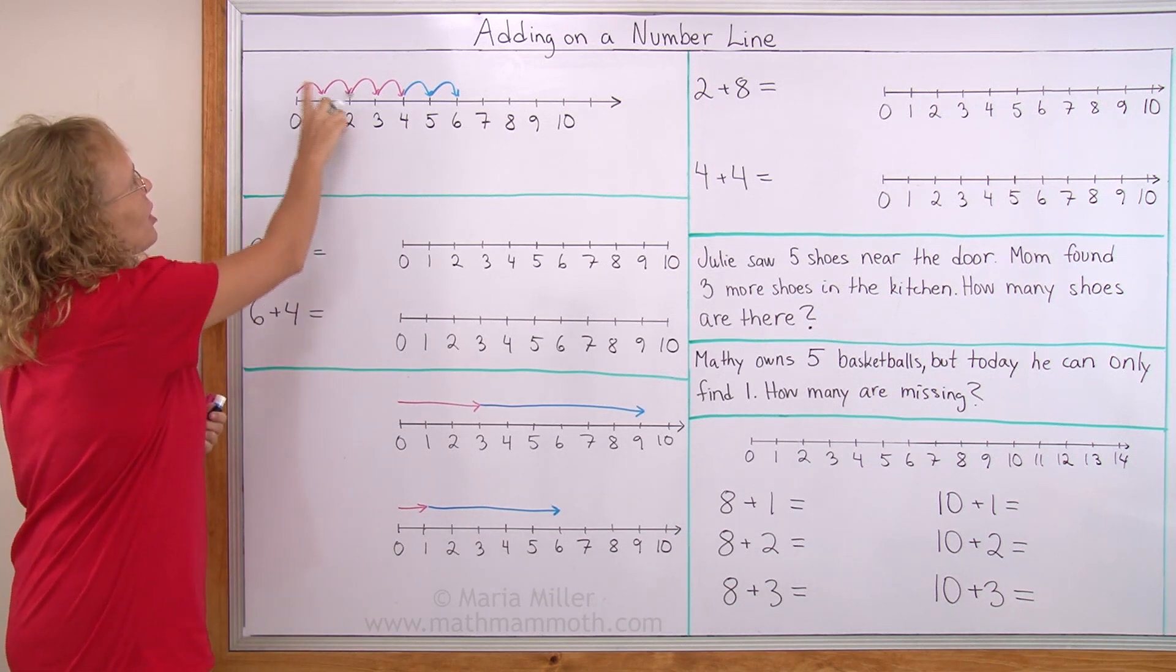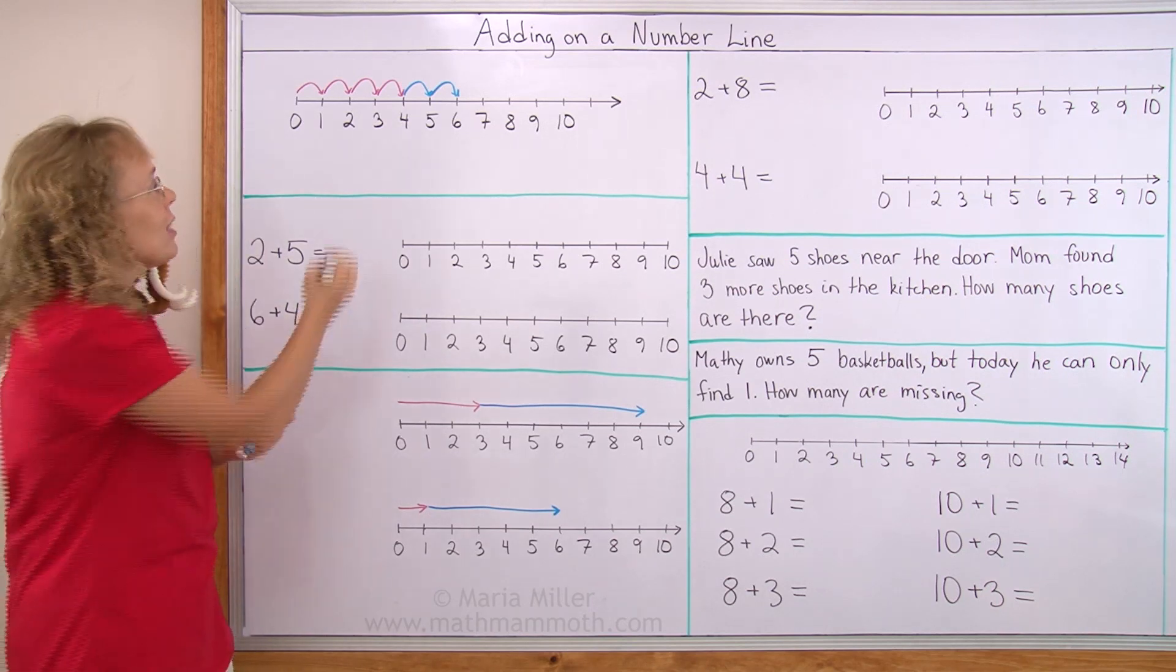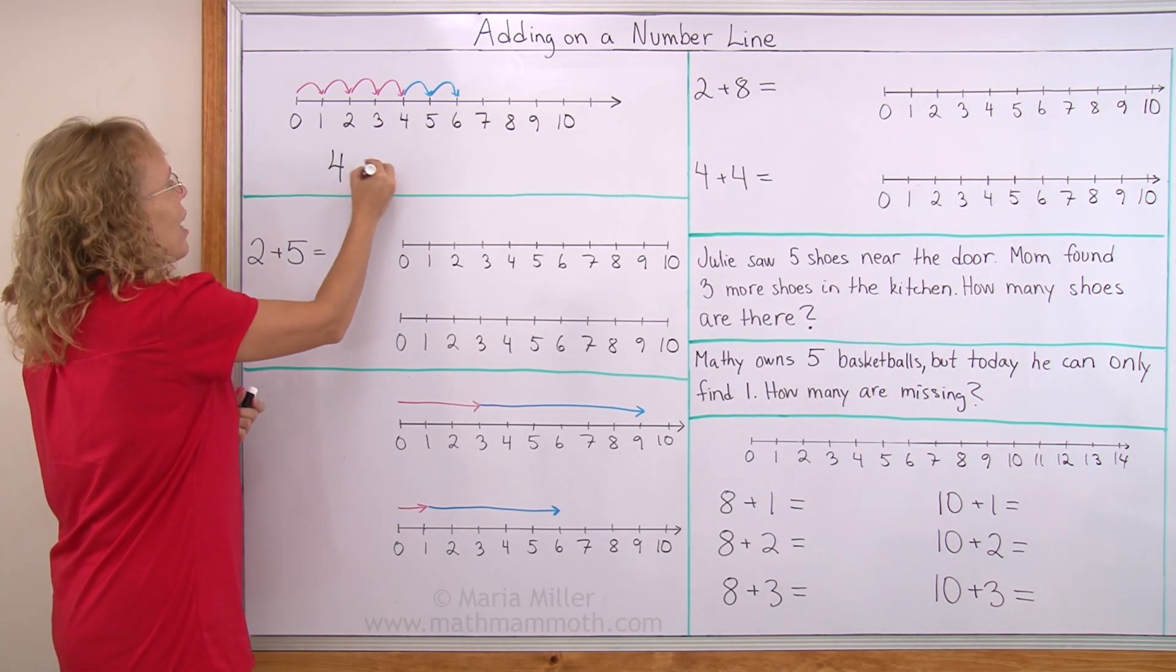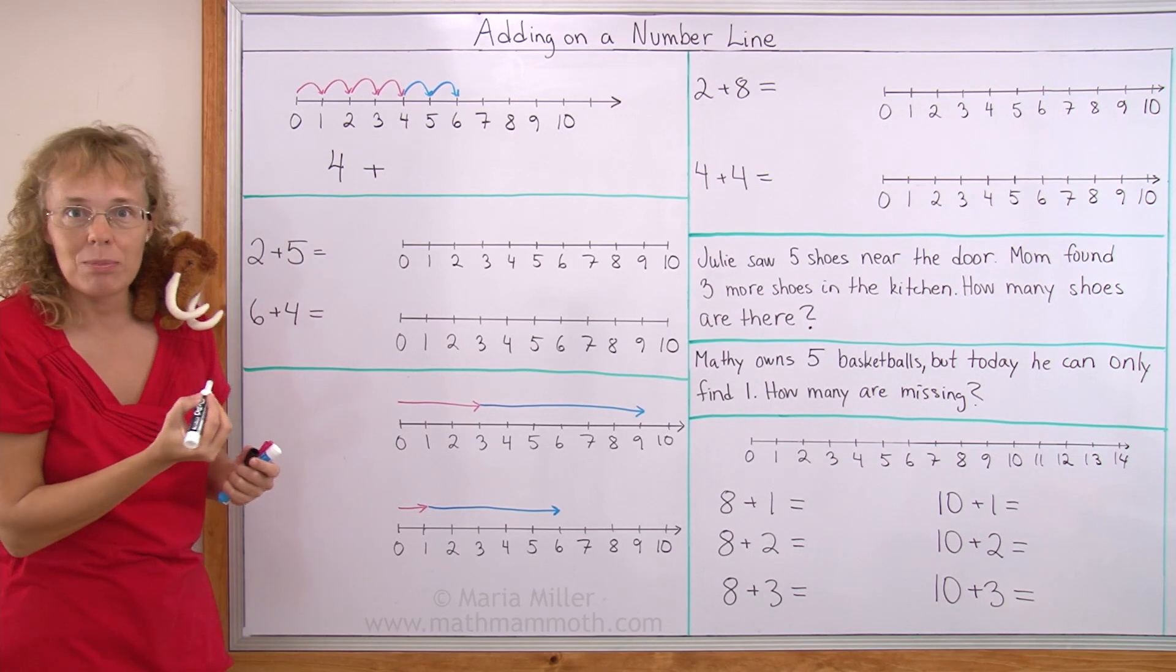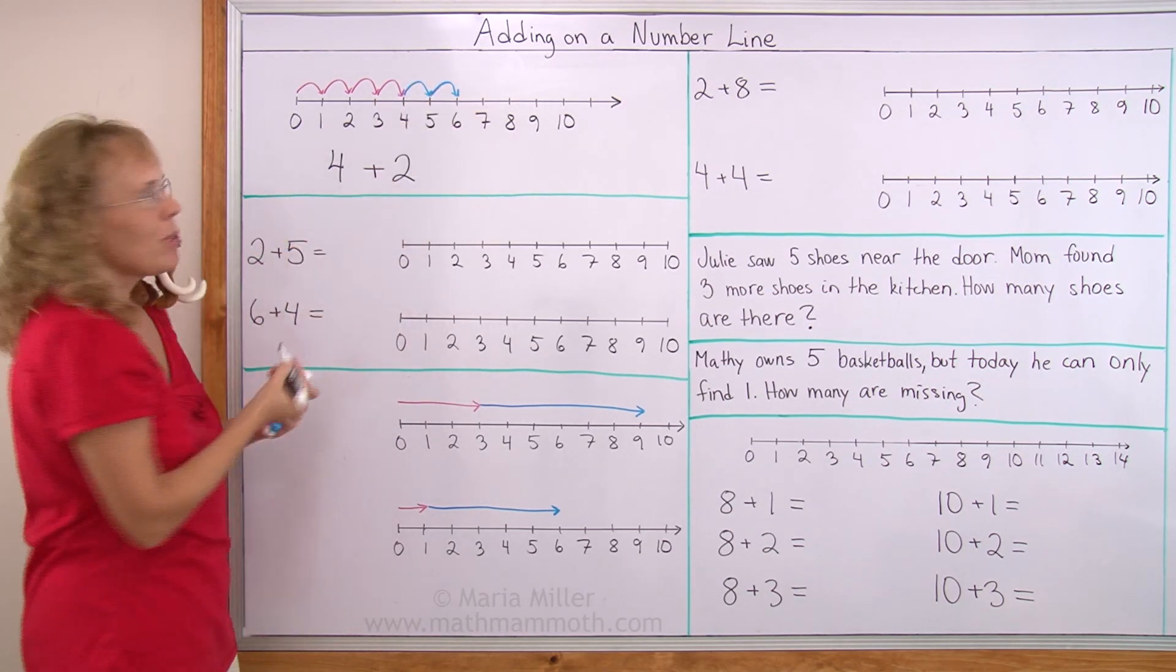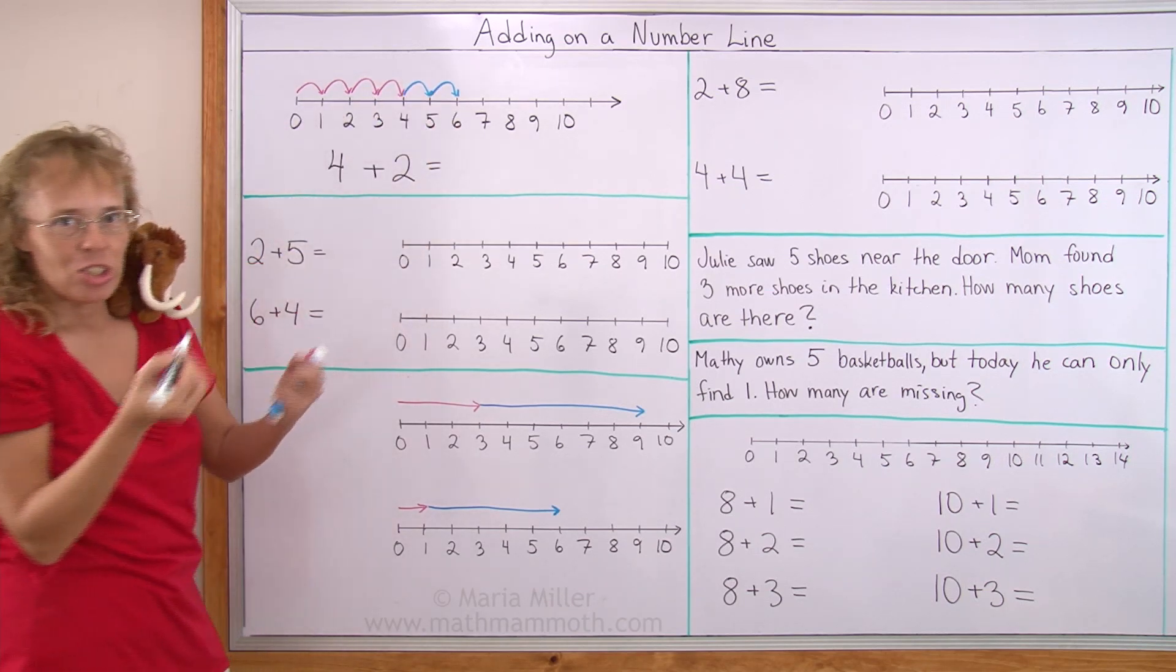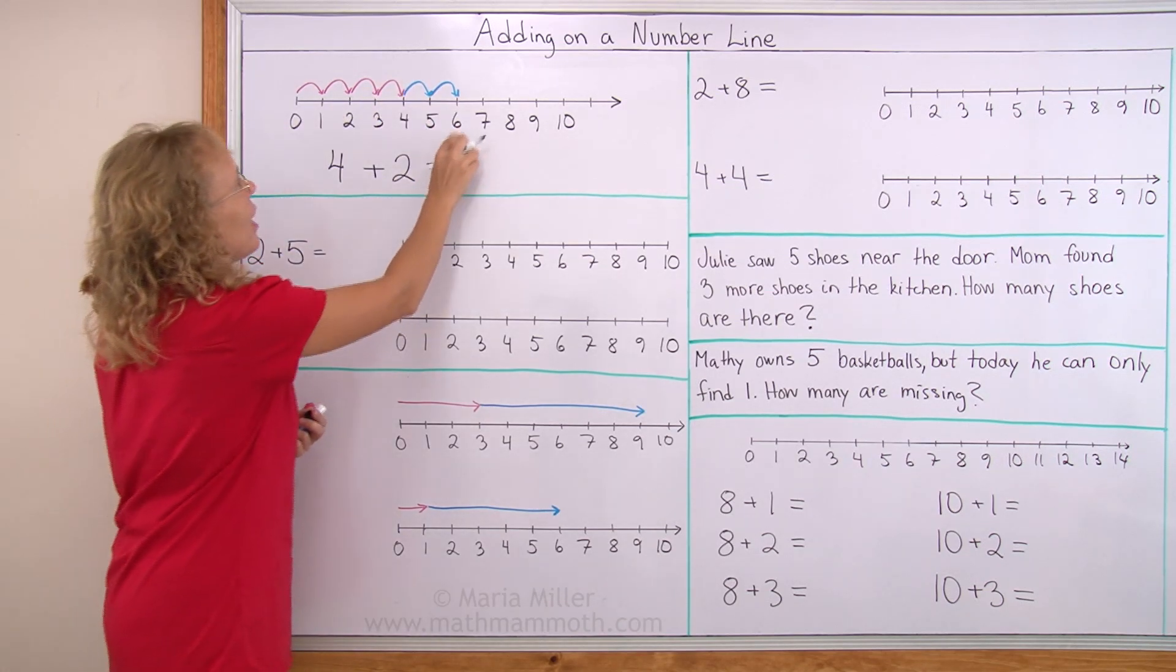So, first of all, all those red ones, there are 4 little jumps, right? So I write 4. Then we add 2 more little jumps, the blue ones. 4 plus 2. And then where do we end up after all this jumping? On the number line we are at 6, or the rabbit is at 6.